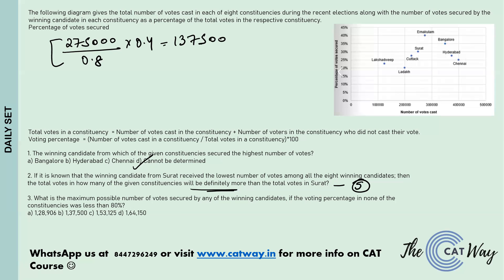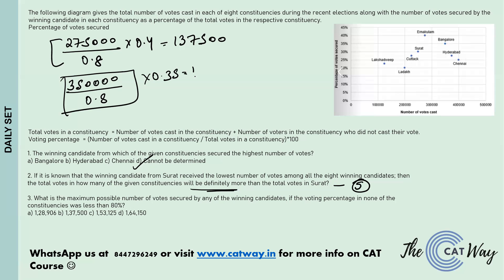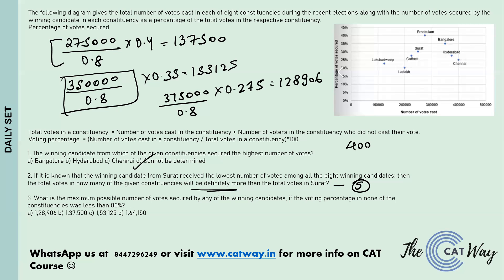For Ernakulam the result is 1,37,500. For Bangalore, 3,50,000 votes were cast — 80% of total — and the candidate secured 35%, giving 1,53,125 votes. For Hyderabad, 3,73,750 votes cast at 80% gives 27.5% secured = 1,28,906 votes. For Chennai, 4,00,000 votes cast at 80% gives 25% secured = 1,25,000 votes. The maximum is 1,53,125 from Bangalore — option C.